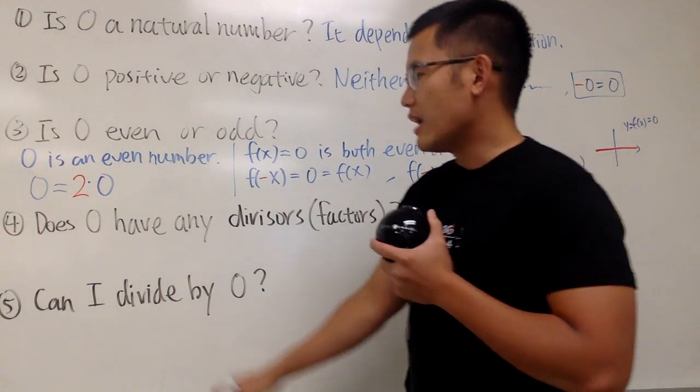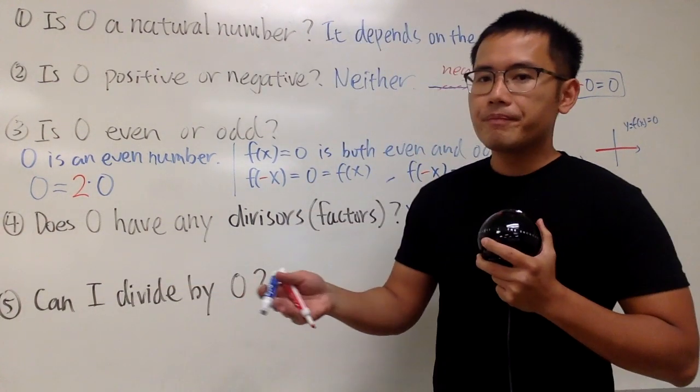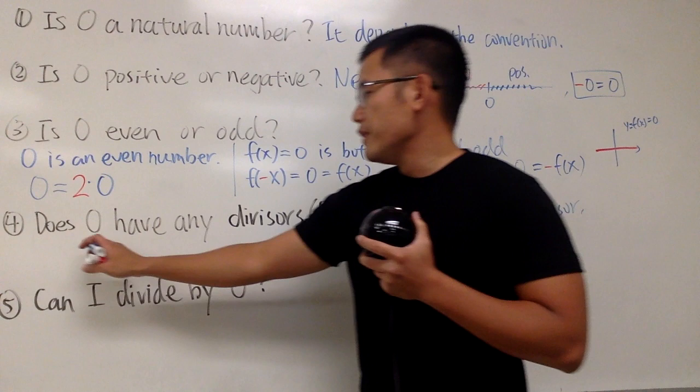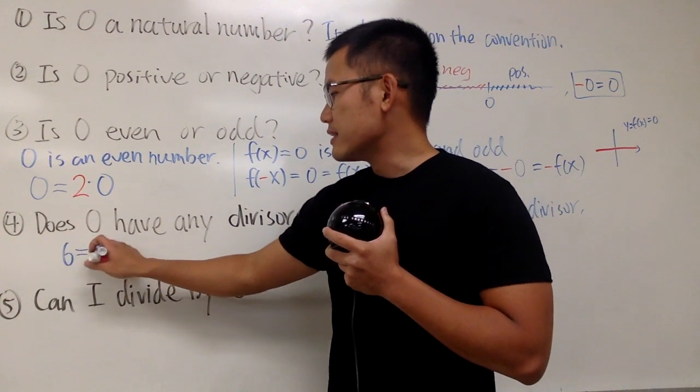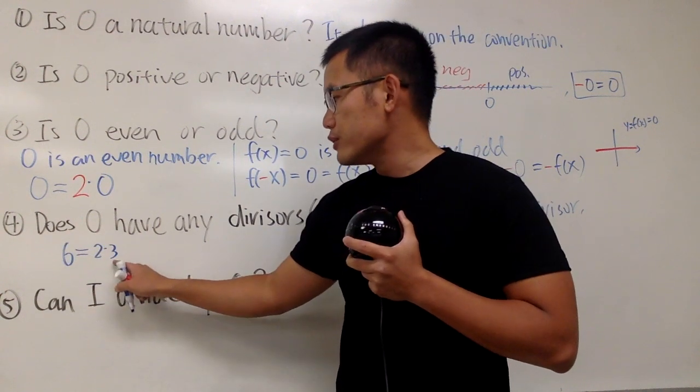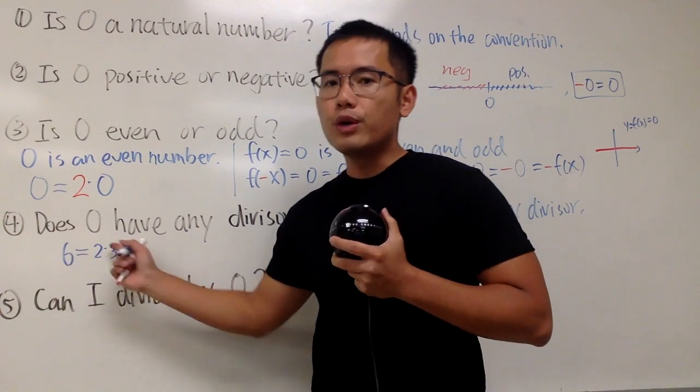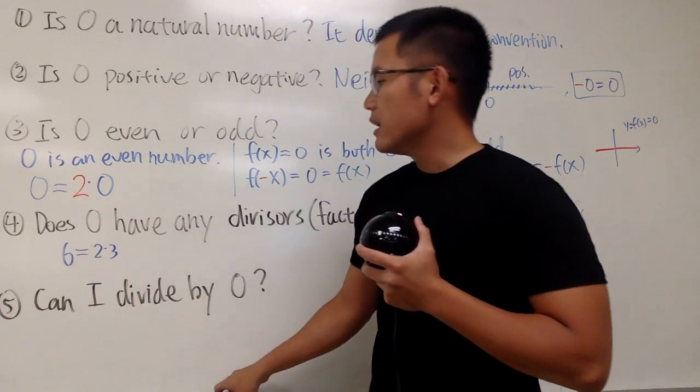Well, why? Because check this out. To make a factor or divisor of a certain number, if you look at 6 again, 6 is the same as 2 times 3. Yep. So we can say 2 and 3, they are factors of 6. Or 2 and 3, they are divisors of 6. That's good.